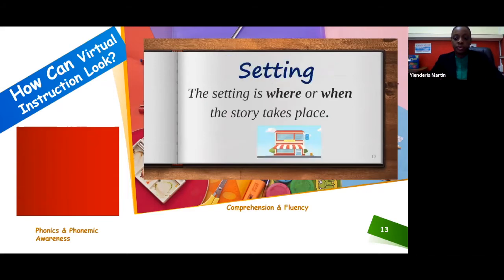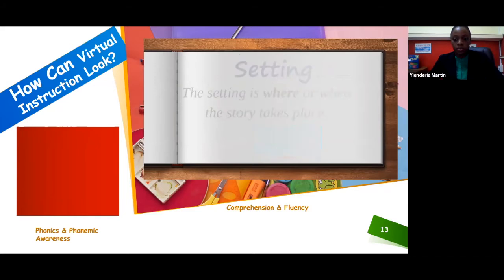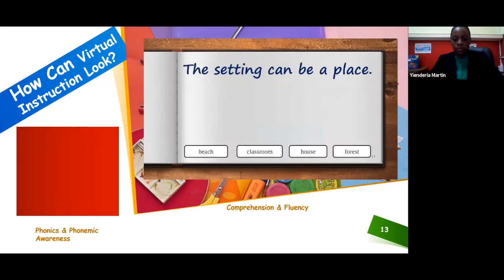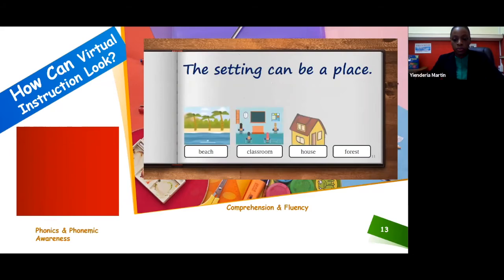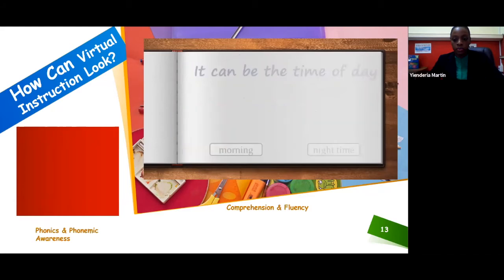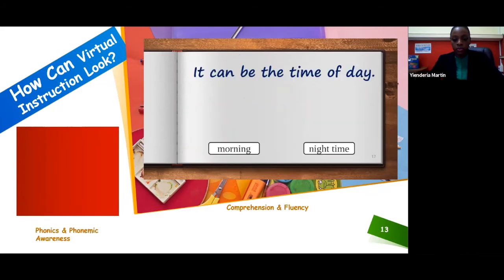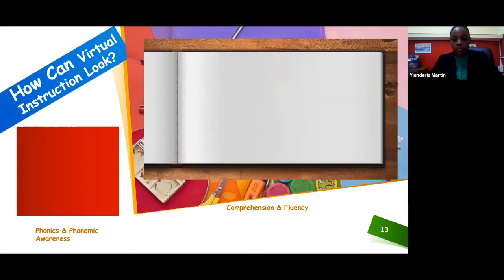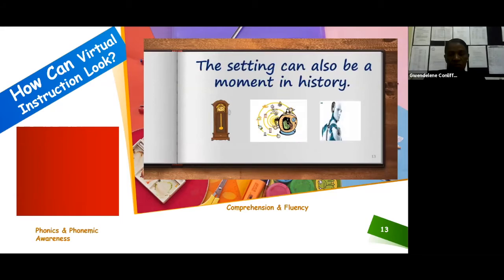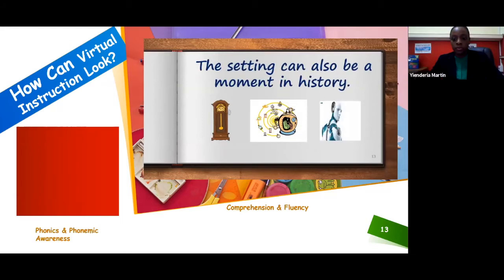Let's look at another story element, the setting. It is where or when the story takes place. The setting can be a place, like the beach, a classroom, a house, or a forest. It can also be the time of day — for example, a story may take place in the morning or at night time. The setting can also be a moment in history, like the past, present, or future.